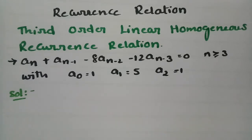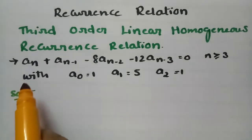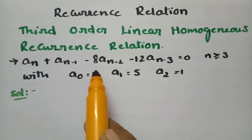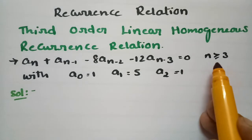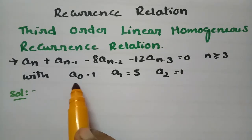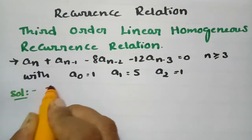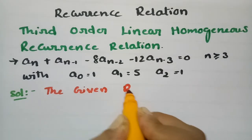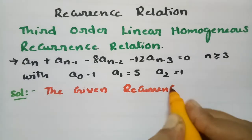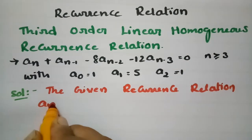In today's video I am going to give solutions for third order linear homogeneous recurrence relation, related to discrete mathematics. The question is: a_n plus a_(n-1) minus 8*a_(n-2) minus 12*a_(n-3) is equal to 0, where n is greater than or equal to 3, with initial conditions a_0 is equal to 1, a_1 is equal to 5, and a_2 is equal to 1.